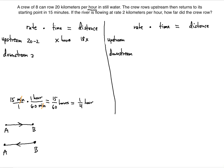The downstream rate will be greater than 20 by 2, so 20 plus 2 equals 22, because the water works with you. They already spent X hours going from A to B, so the remaining time for the return trip from B to A is 1/4 minus X hours. The downstream distance is therefore 22 times (1/4 minus X).